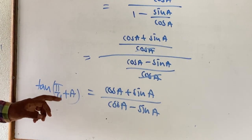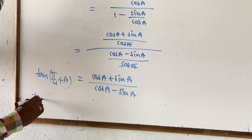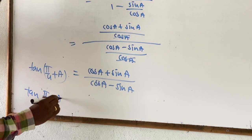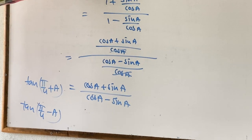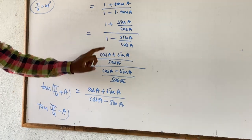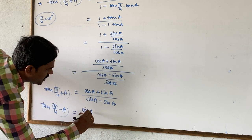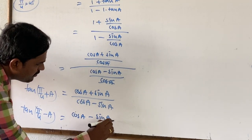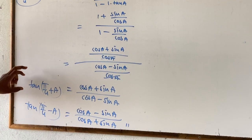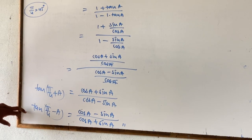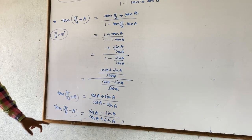Similarly, for tan(π/4 − A), using the tan(A−B) formula — changing plus to minus and minus to plus — the same simplification gives us: cos A minus sin A divided by cos A plus sin A.